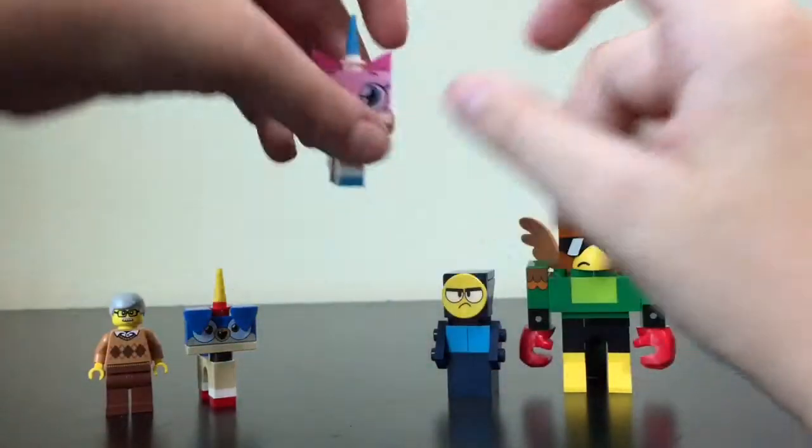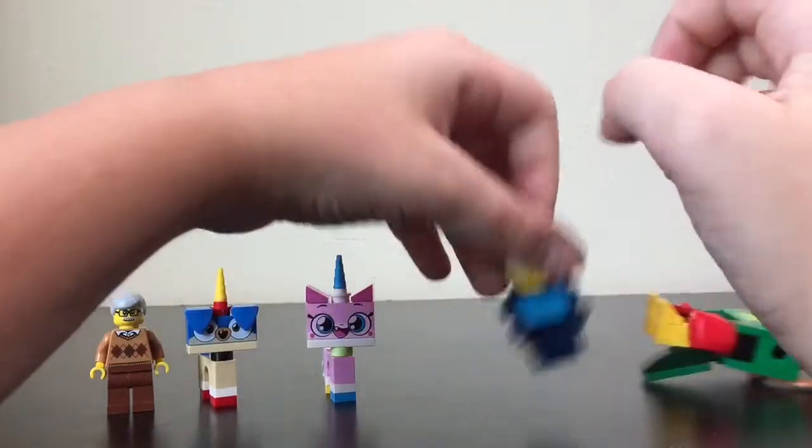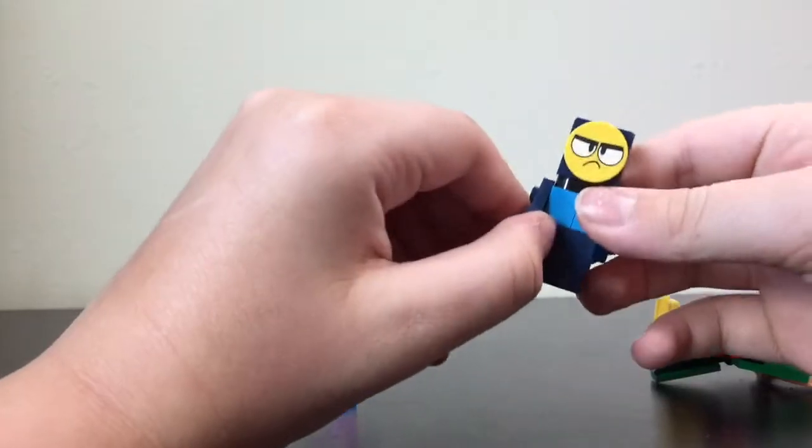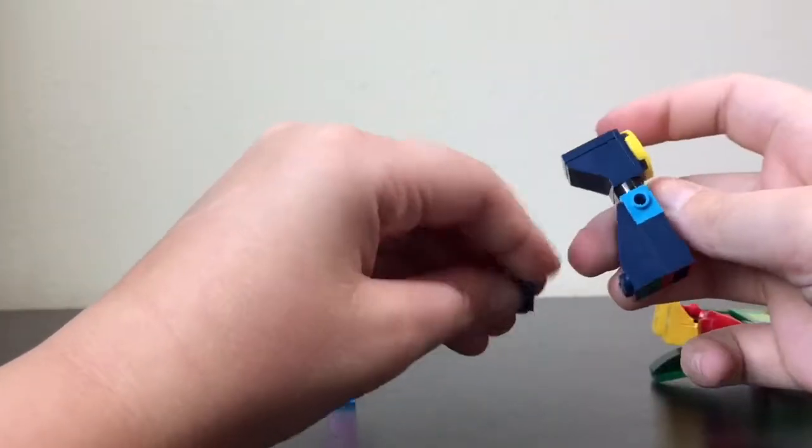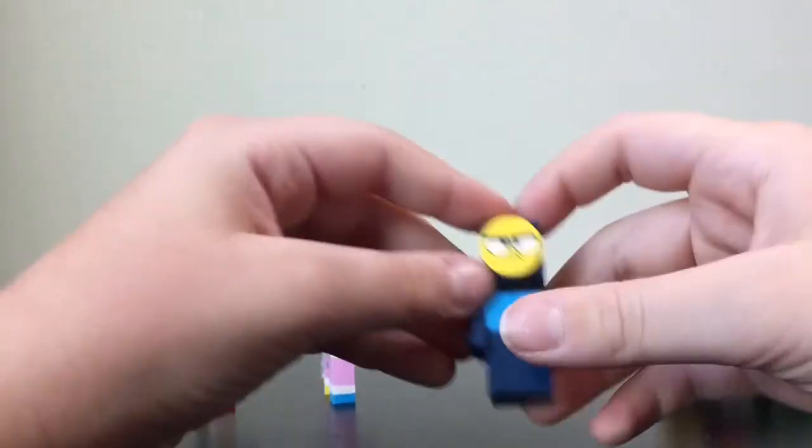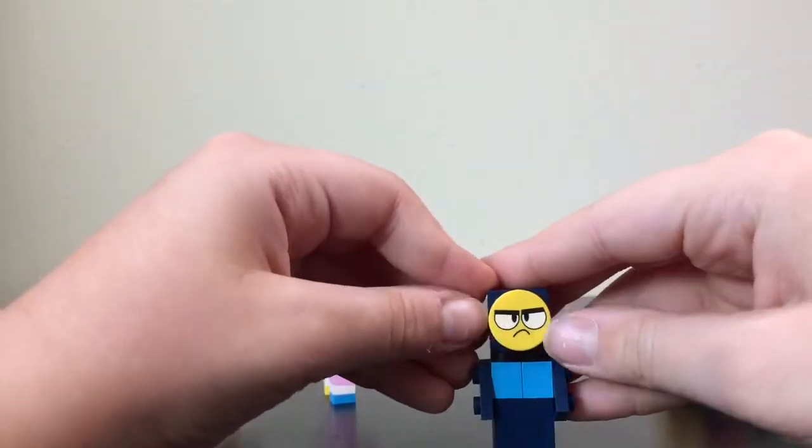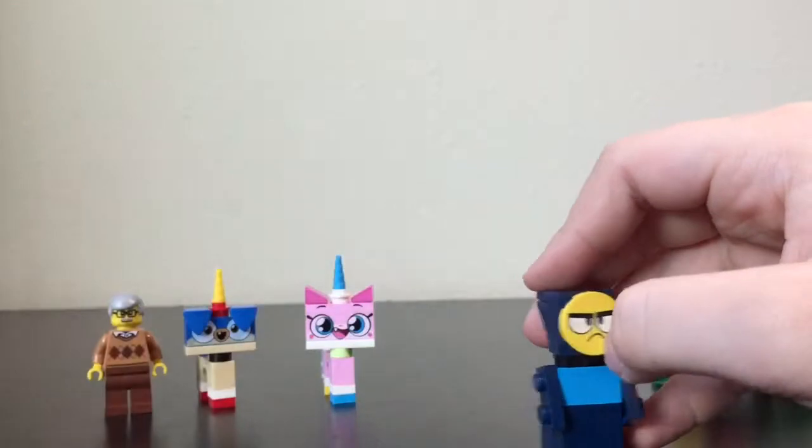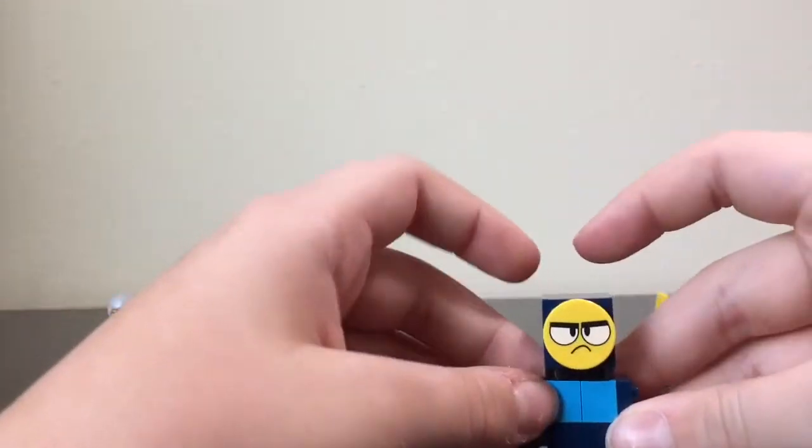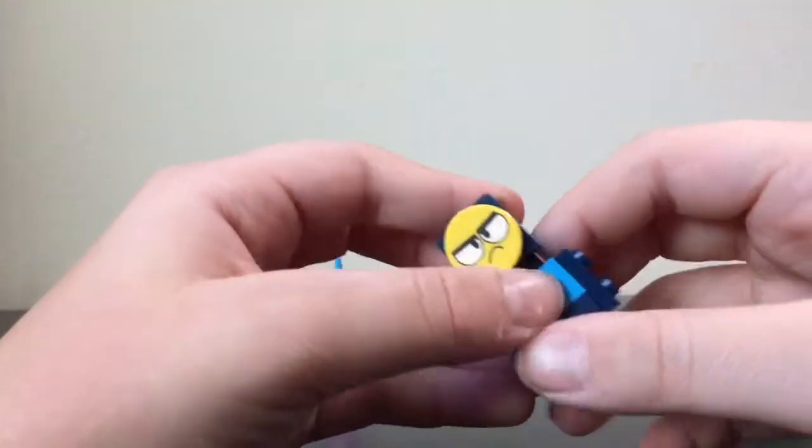And on to the next one. I don't know the name of this guy but he seems pretty grumpy. The way you do his arms is like that. This was a print actually. There's only two stickers or three, four stickers and they're in the decoration part.